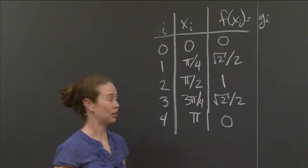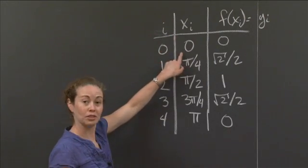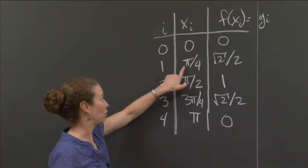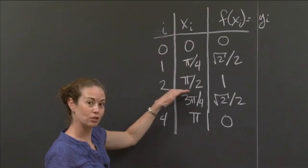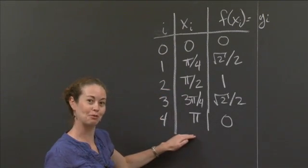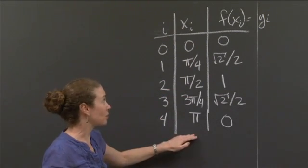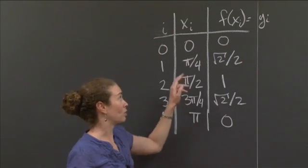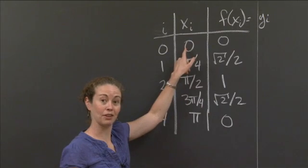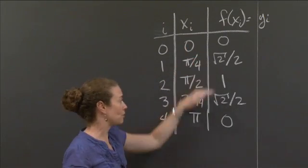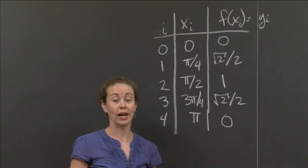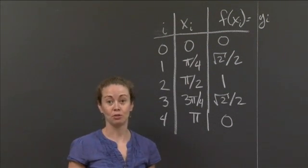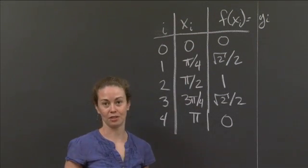So that will be length pi over 4. So x0 is just 0, x1 is pi over 4, x2 is pi over 2, you get the idea, x sub 4 is pi. And then what I've done is, to make it really easy on myself, is I've determined what the y values are associated to that x value, given that my function is sine x. So I filled in a table of values for myself right away, and then when I want to use the two rules, I can simply come back and look at this table.